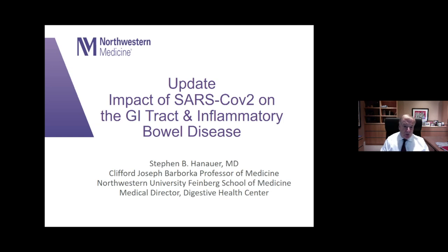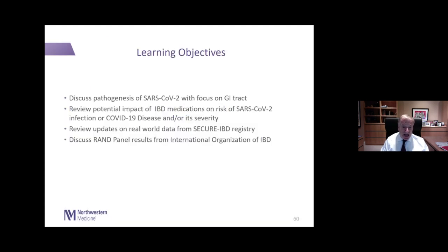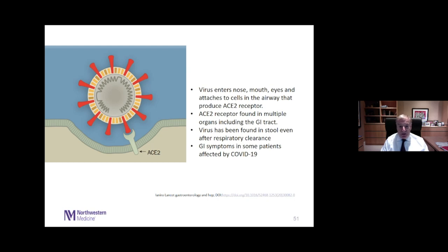We've heard that the virus enters through the nose, mouth, and eyes and attaches to cells in the upper airway and nasopharynx. The ACE2 receptor is found in multiple organs including the GI tract, and has also been found in the stool. There are frequent GI manifestations in many patients. ACE2 receptors are present in the stomach, duodenum, and colon, and the viral nucleocapsid protein has also been demonstrated throughout the mucosa of the GI tract from the stomach into the colon.